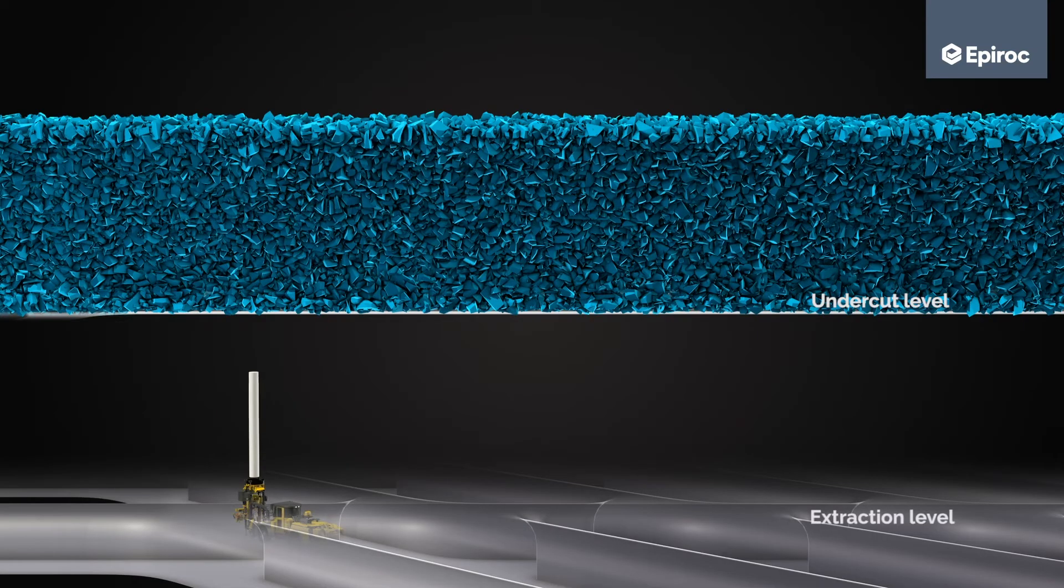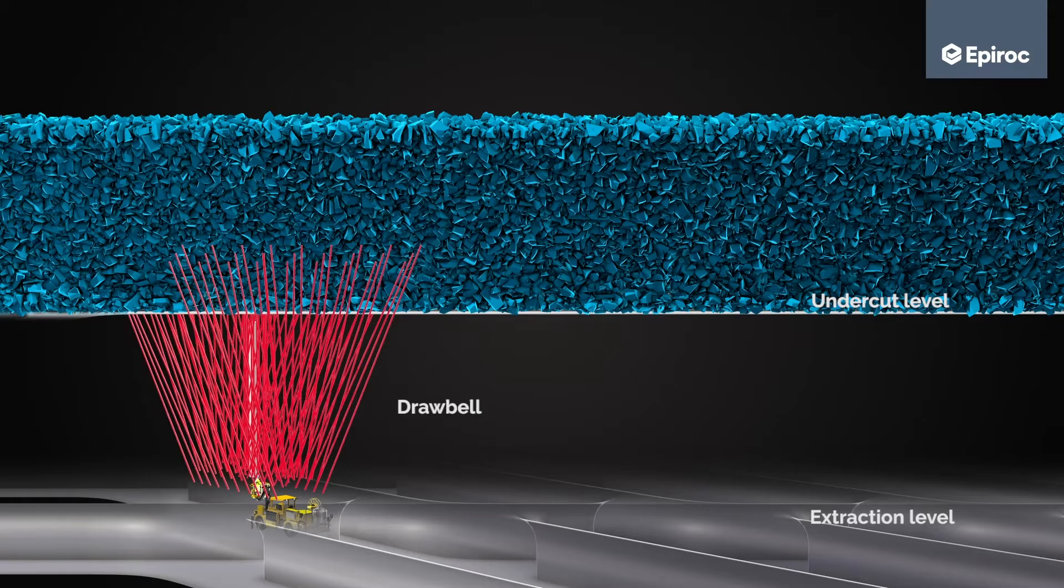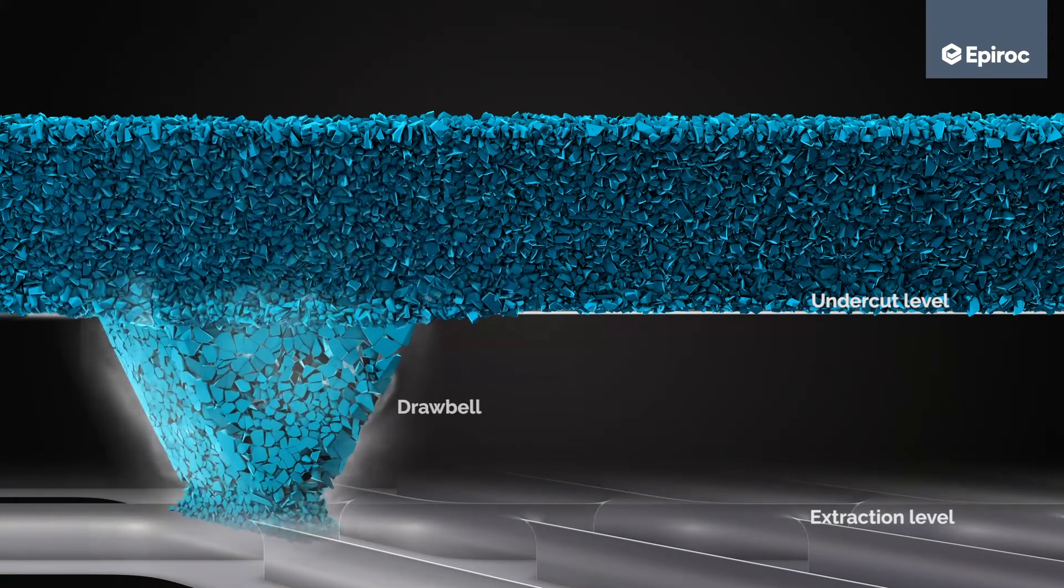Below, an extraction level is developed where ore will be extracted throughout the life of that production area. Drawbells are created between undercut and extraction levels and become passages for caved rock. To avoid misfires, accurate drilling is crucial.